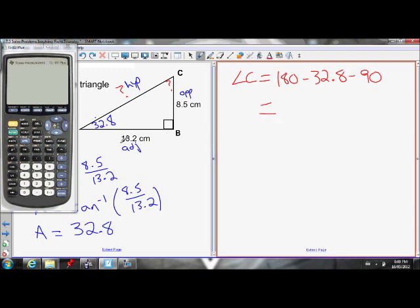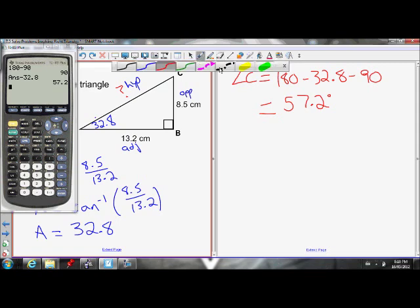Okay, if I put that in on my calculator, so I do 180 minus 90, which is 90 of course, so I could have just done 90 minus 32.8. And that gives me 57.2. So angle C is 57.2 degrees. So that's no longer a question mark, that's 57.2.